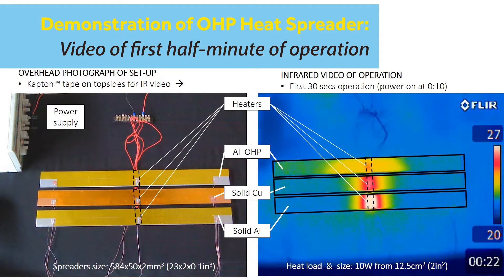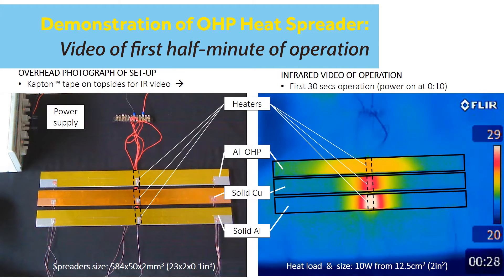Then after 10 minutes of operation, the aluminum and copper heat spreaders are 35 and 25 degrees Celsius warmer than ambient air, while the OHP's hot spot is only 7 degrees Celsius above ambient.